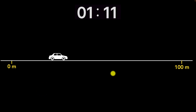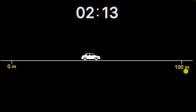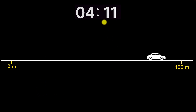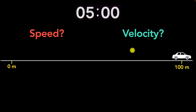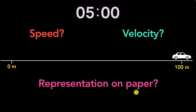Suppose a car travels 100 meters in 5 seconds. The goal of this video is to figure out what is the speed of that car, how is it different than velocity, and how do we represent motion on a piece of paper. Let's find out.